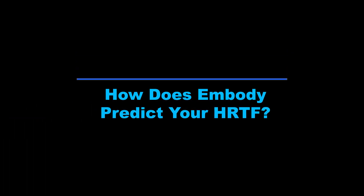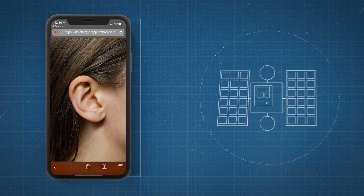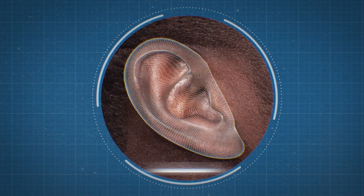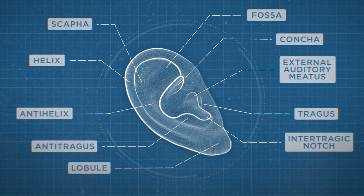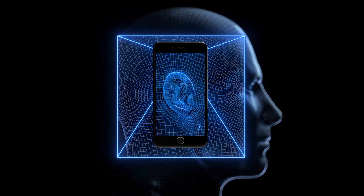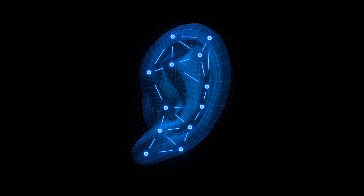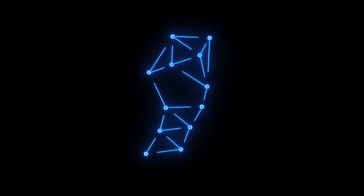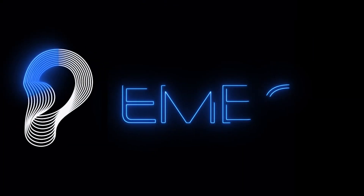So how do we do it? Embody has developed artificial intelligence algorithms at the forefront of data science and acoustic research. The algorithms take just a single picture of your right ear and extract thousands of unique identifiers of your ear shape.